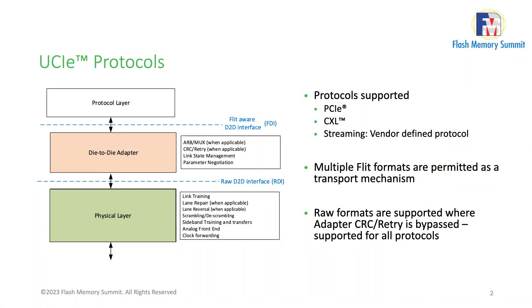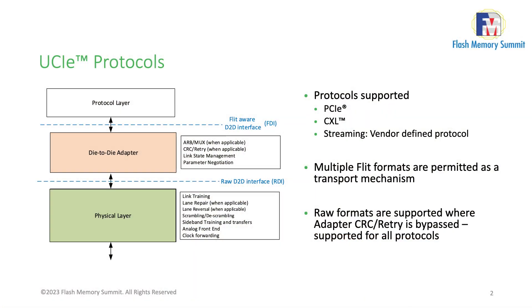Above the adapter, it takes care of things like link retry when needed, link state management, and protocol negotiation — because we support not only multiple protocols, but also multiple flit formats per protocol. The adapter negotiates with the remote link partner so that you can operate in a common known configuration. Above that we have the protocol layer, with a well-defined interface called FDI. In terms of protocols supported, we have PCIe, CXL, as well as provision for a streaming protocol, which could be any vendor-defined protocol like CHI or AXI or other proprietary protocols.